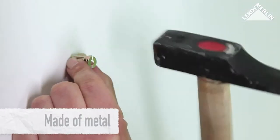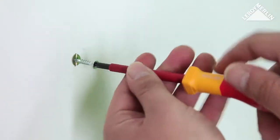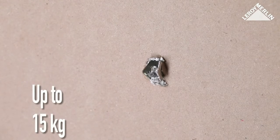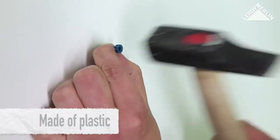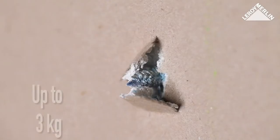Drive the plug into the plasterboard with a hammer. When turning the screw, the wings open and lock the plug in place. This will support 15 kg of vertical load. The principle here is the same, but this plug only supports 3 kg of vertical load.